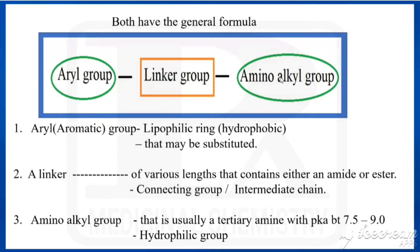The three parts are: one is the aryl group, another is the amino alkyl group, and both are connected by means of a linker. The aryl group can otherwise be called the aromatic group, which is the lipophilic ring — that is, the lipophilic region or hydrophobic region — and that may be substituted.